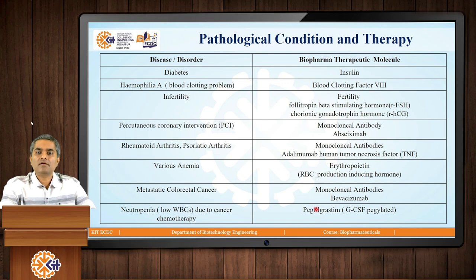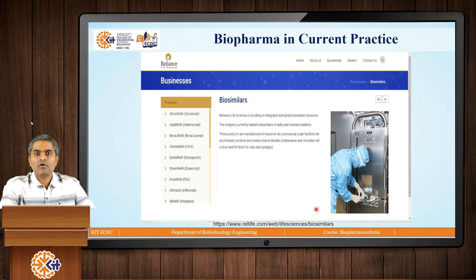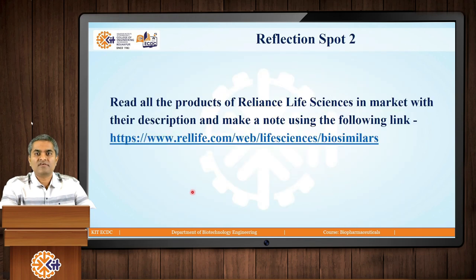Talking about the Indian condition, many pharmaceutical industries have entered the zone of biopharmaceutical production. One of the major players is Reliance Life Sciences. The snapshot shown illustrates the biosimilars business segment of Reliance Life Sciences, listing different types of biosimilars. Here is Reflection Spot 2 for you: please refer to the website given and read all the products of Reliance Life Sciences available in the market with their descriptions, and make a note of the same.